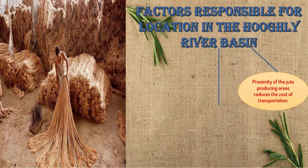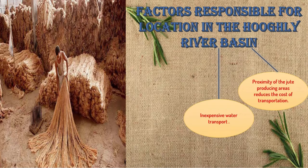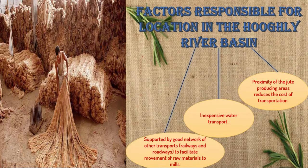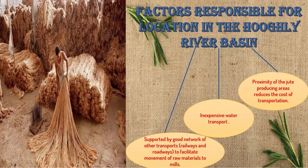The next factor is inexpensive water transport, which is available here. Water transport is the cheapest mode of transport, and waterways are naturally available so they hardly need maintenance. Along with inexpensive water transport, the Hooghly River basin is also supported by a good network of railways and roadways, which facilitate the movement of raw materials to the mills.